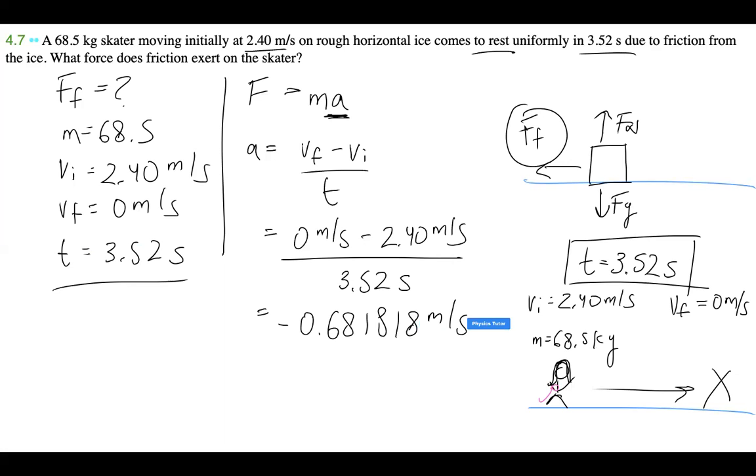My calculator is telling me that the acceleration, or deceleration, is -0.681818 meters per second squared. It doesn't really matter how many decimal places you carry, as long as you maintain accuracy.